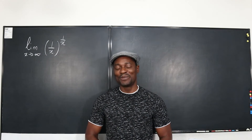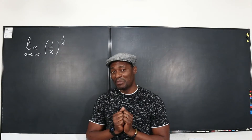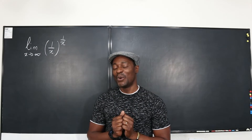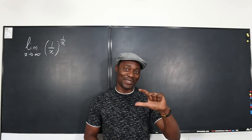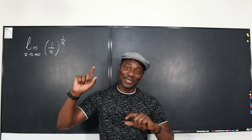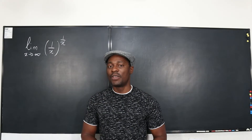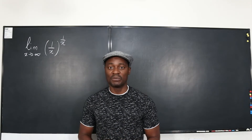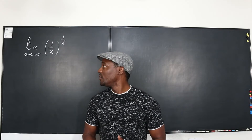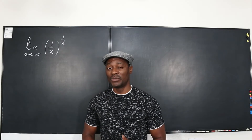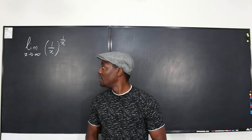Hello and welcome to another video. This is another limit problem, but this time it's a bit weird — weirder than what we've done before — because you have a rational expression raised to a rational expression, and we're taking the limit as x goes to infinity. If you plug this into Desmos or some graphing device, you'll be able to see that our answer is supposed to be one.